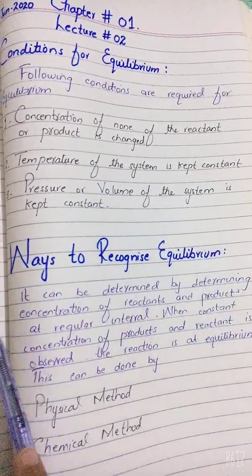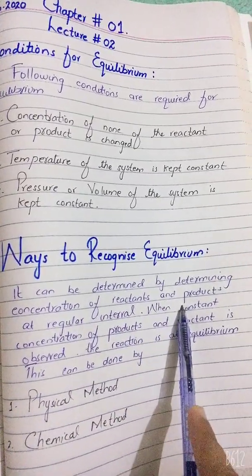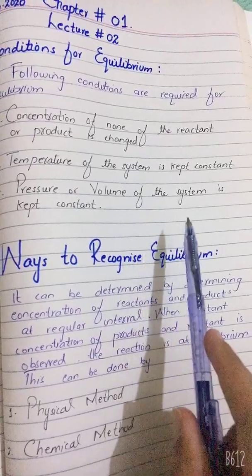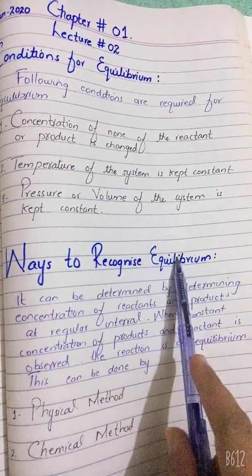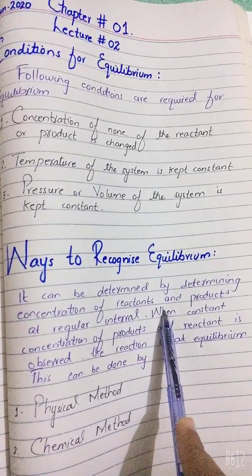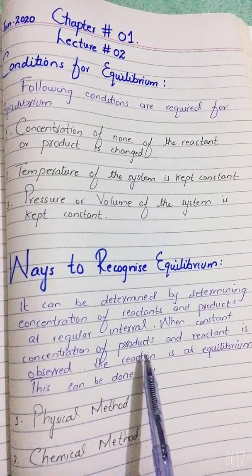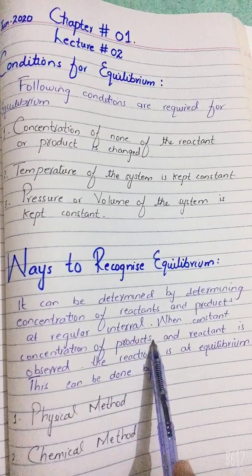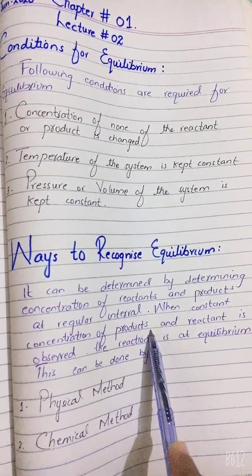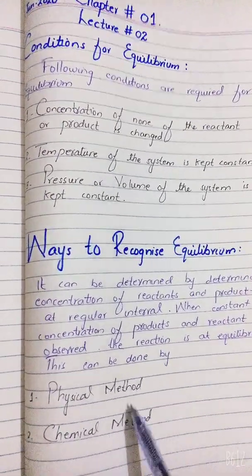It can be determined by measuring the concentration of the reactants and products. You come to know that equilibrium has been established when you measure the concentration of the reactants and products at every regular interval, and when the concentrations remain constant, you say that equilibrium has been achieved. For this, you have two ways: the physical method and the chemical method.